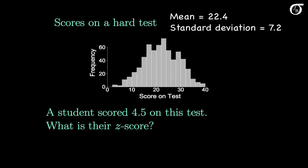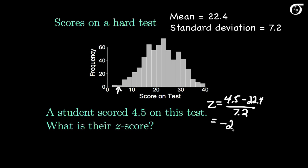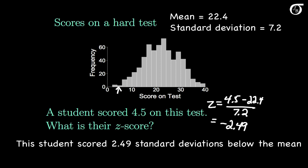Another student scored 4.5 on this test. The z-score is equal to the value of the observation 4.5 minus the mean of 22.4, divided by the standard deviation of 7.2. This works out to minus 2.49. So this particular student scored 2.49 standard deviations below the mean on this test.